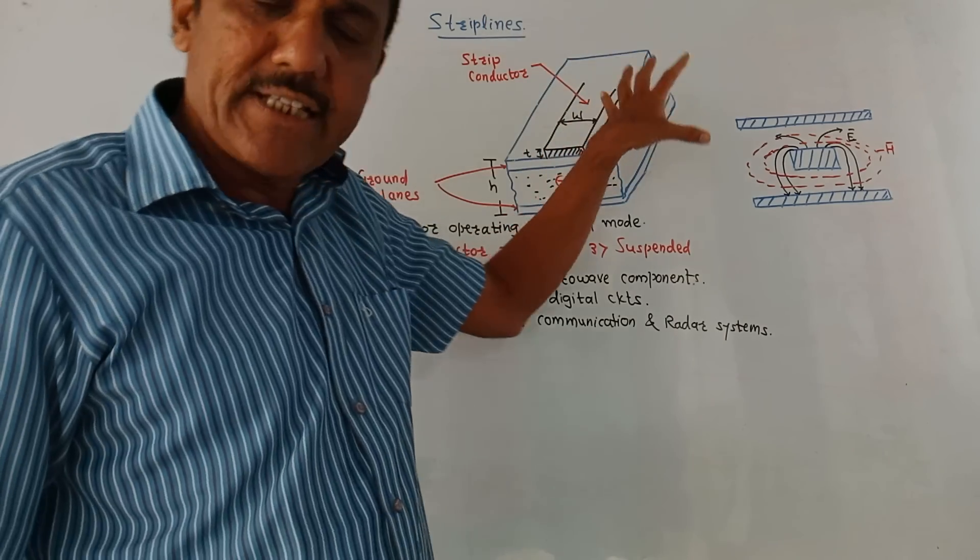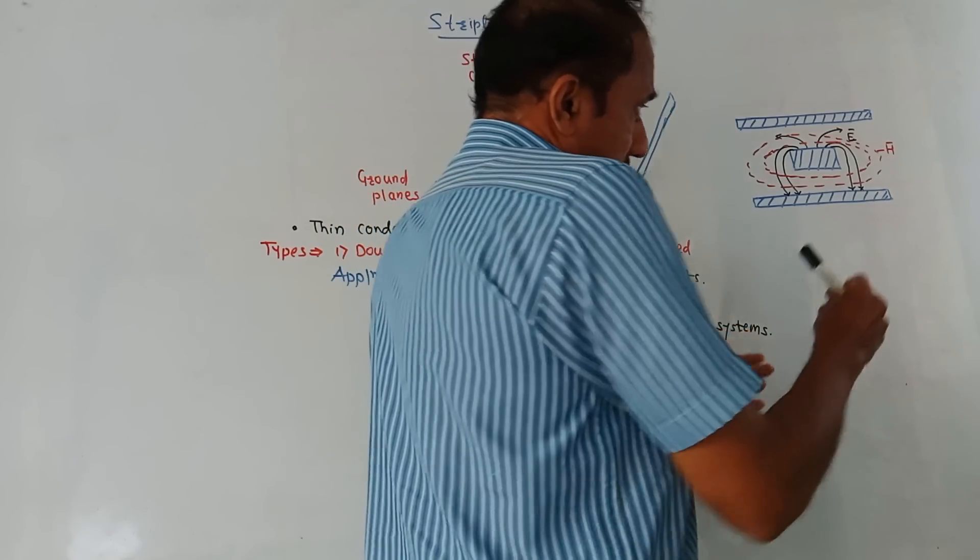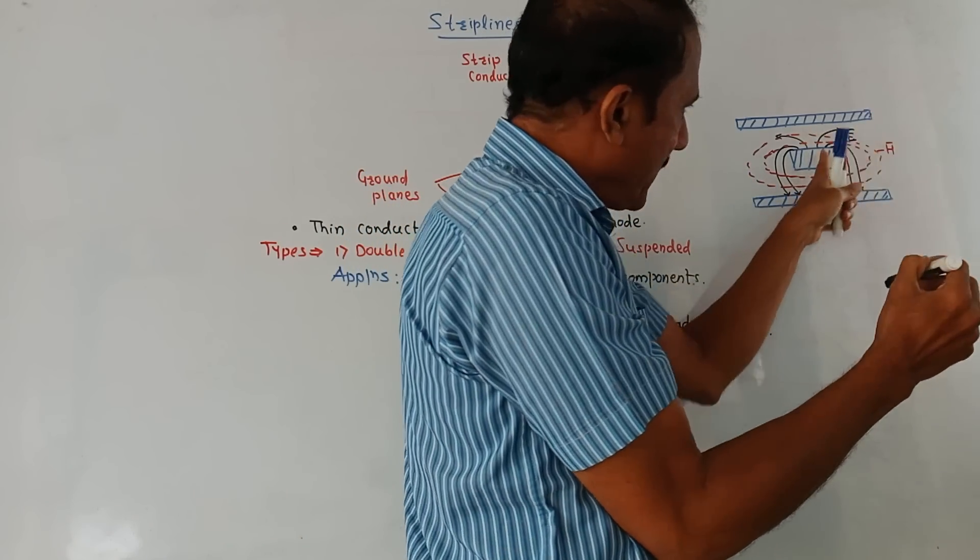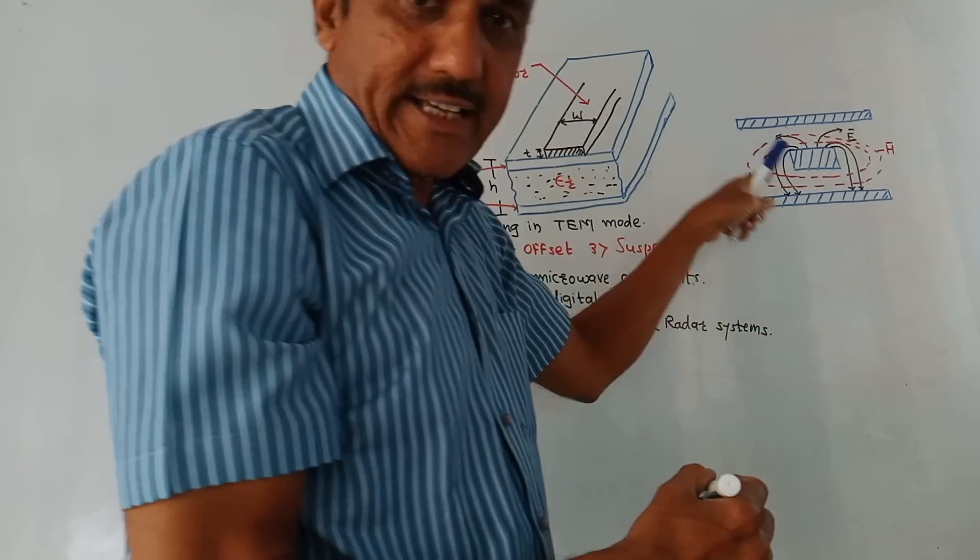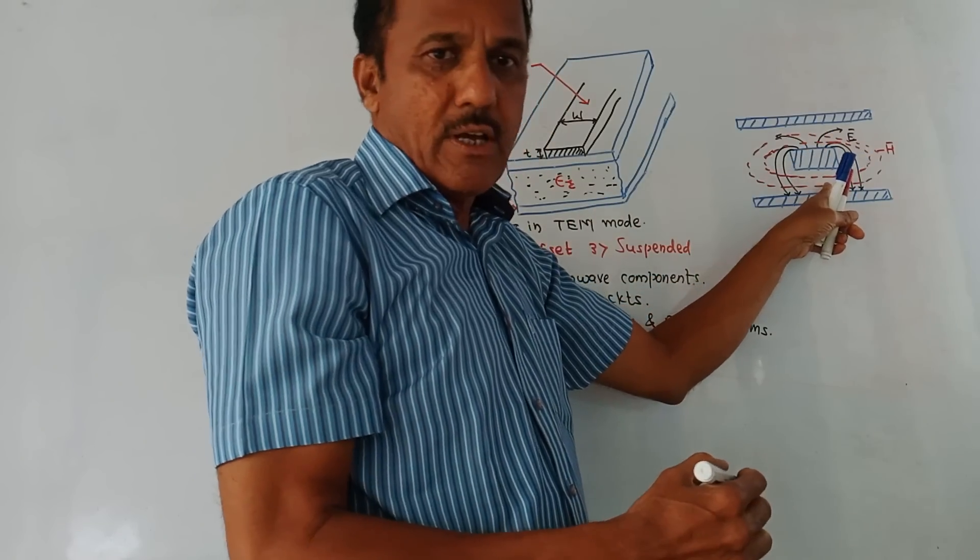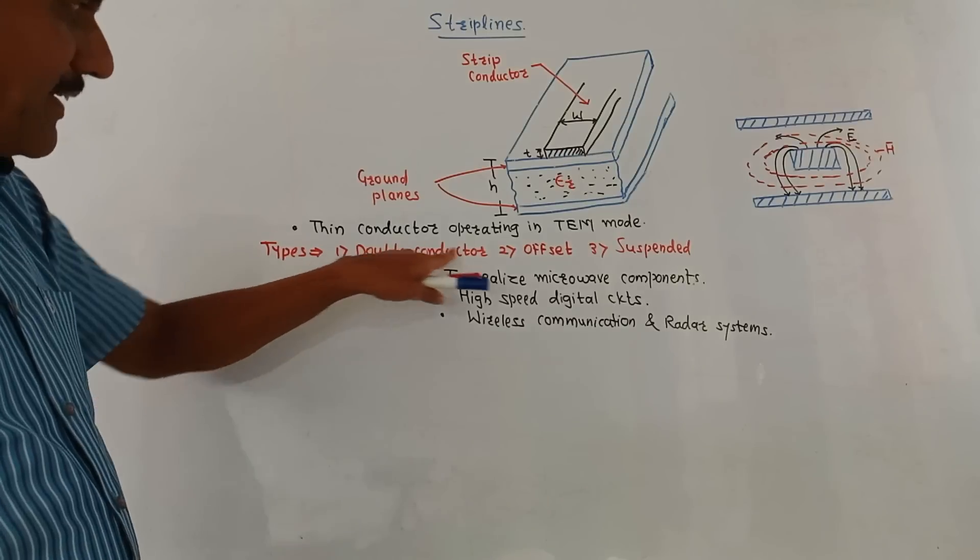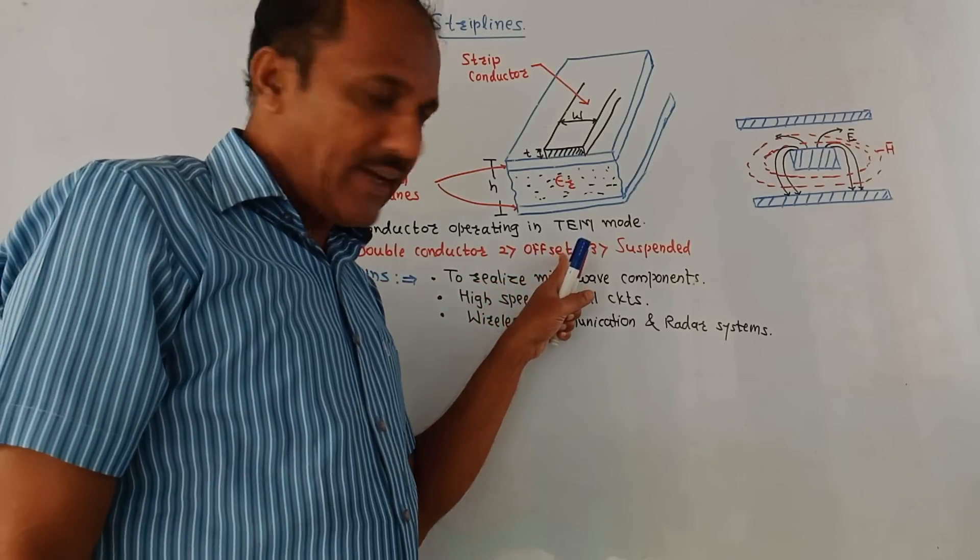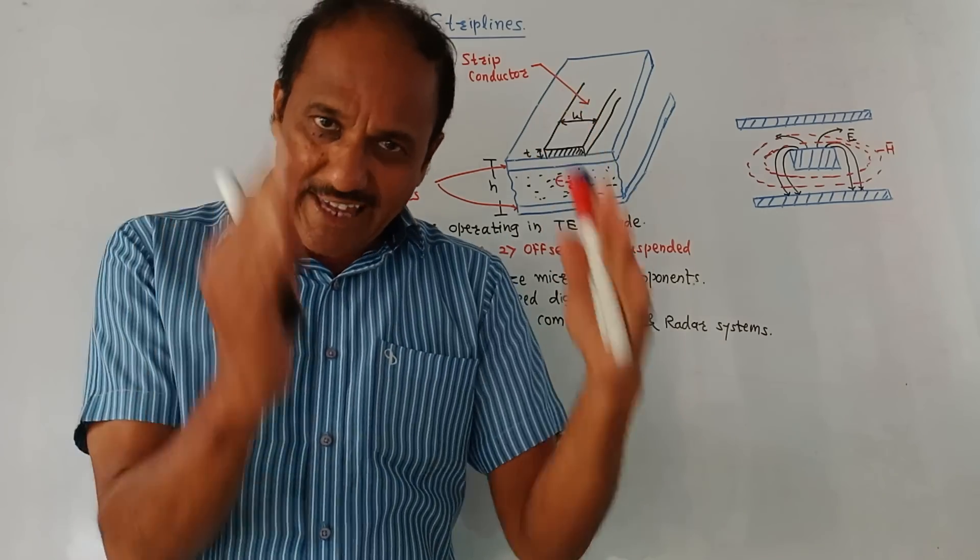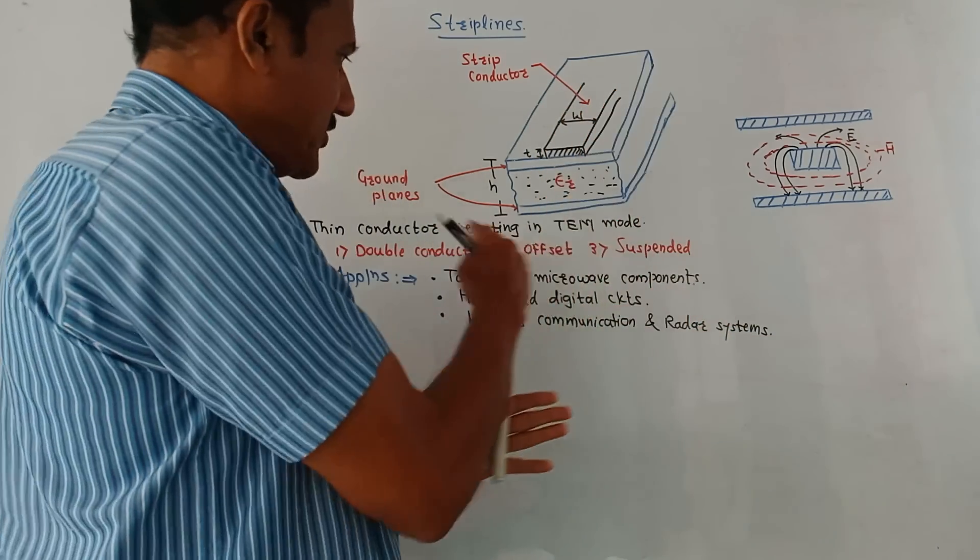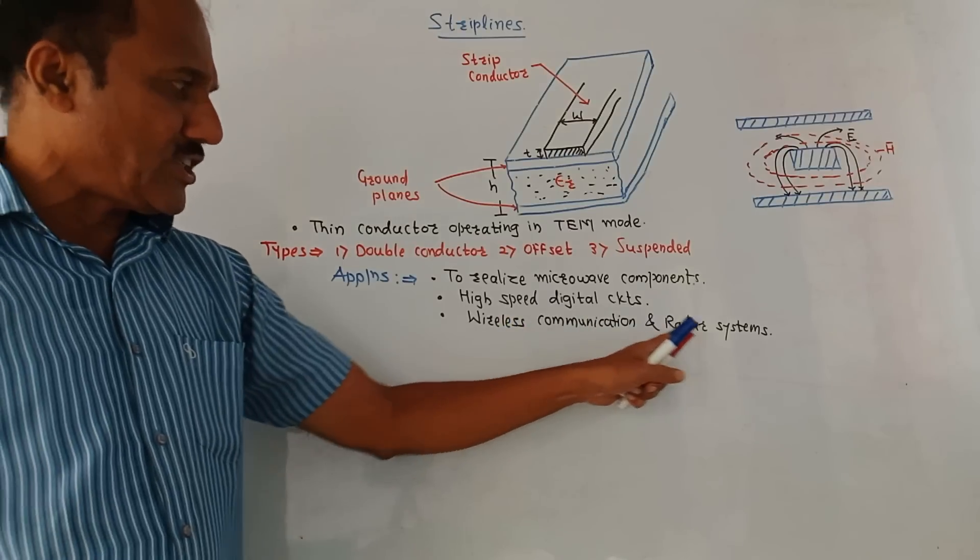Now this diagram shows the field configuration. This E field, that is electric field, is drawn with black ink and magnetic field is around this strip which is drawn with red ink. So this diagram shows the electric field distribution for the strip lines. Now there are different types of strip lines. First is double conductor strip line, second is opposite strip line, and third is suspended strip line. Important applications: Whenever you want to design any micro component, then strip lines are used. Then they are used in high speed digital circuits and in wireless communication and radar systems.